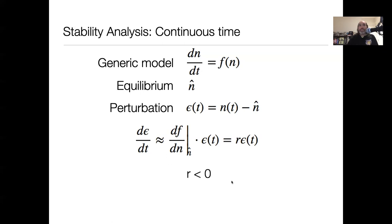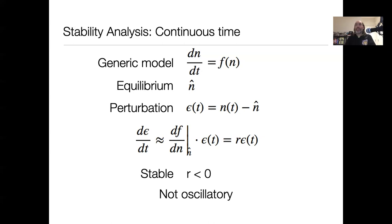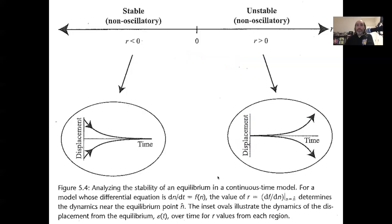So in this case, the criteria for continuous time are simpler. If this r is less than zero, it's stable. There's not an equivalent tendency to get oscillatory behavior with continuous time models. Not to say that continuous time models can't produce oscillations, but this idea of a response to a small perturbation doesn't give us that kind of oscillatory response because we don't have this sign-flipping sort of thing. If r is positive, the displacement grows with time; if r is negative, the displacement shrinks.